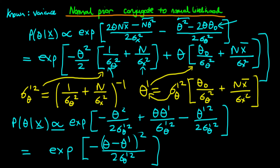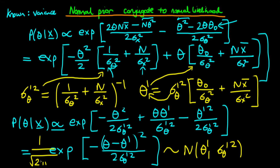What we notice is that this has exactly the same theta dependence as a normal distribution with mean theta prime and variance sigma theta prime squared. Because we have all of the theta dependence, and because this density has to integrate to 1, we get out front 1 over the square root of 2 pi sigma prime theta all squared. So this is exactly a normal density. In other words, we've proved that the normal prior is conjugate to a normal likelihood, and we've found the new mean theta prime and the new updated variance sigma prime theta squared.